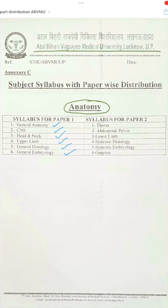In paper 2 there will be thorax, abdomen and pelvis, lower limb, systemic histology, systemic embryology, as well as genetics.